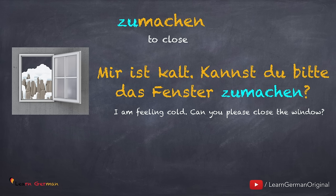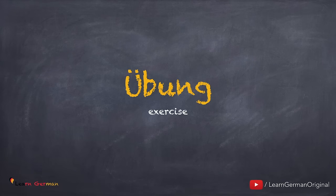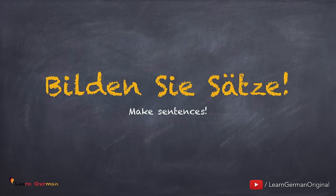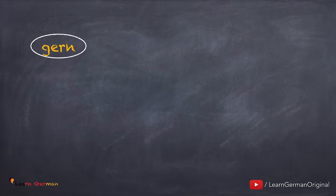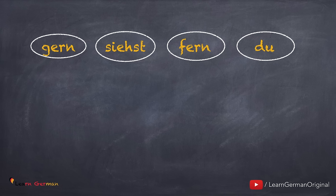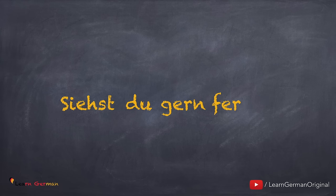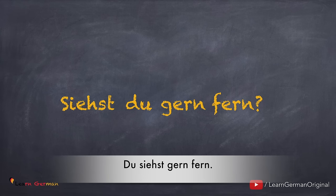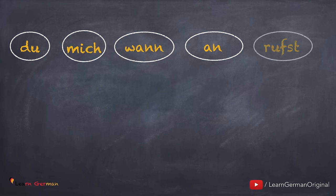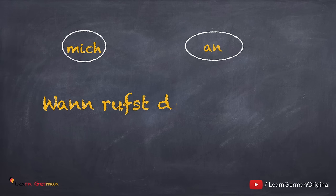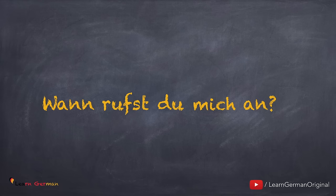Those were the most important trennbare Verben in daily use — we'll cover more in following lessons. Now let's do a small exercise to see what you have understood. Übung — Bilden Sie Sätze! For the first one, make a sentence with the given words, remembering that the prefix goes at the end. The answer is: 'Ziehst du dich an?' Another alternative is: 'Du ziehst dich an.' For the second sentence, bring the words together and the answer is: 'Wann rufst du mich an?' Well done!